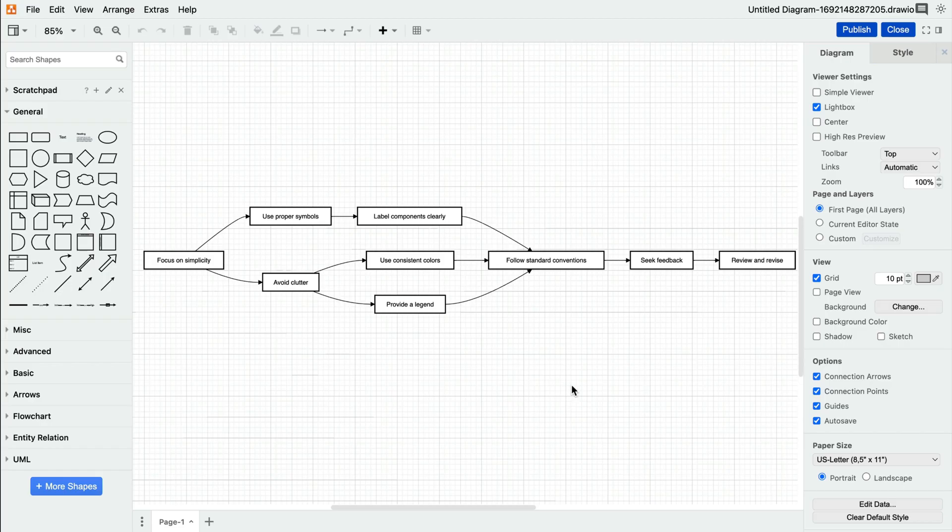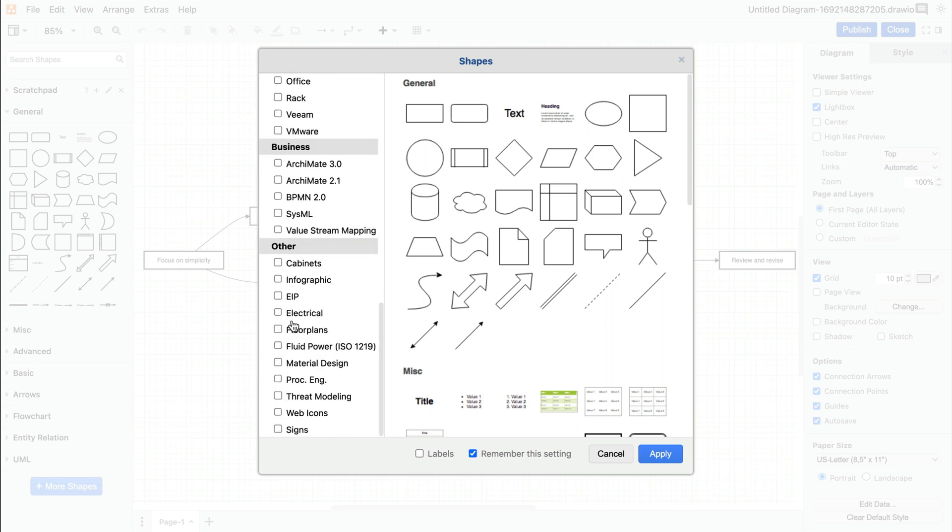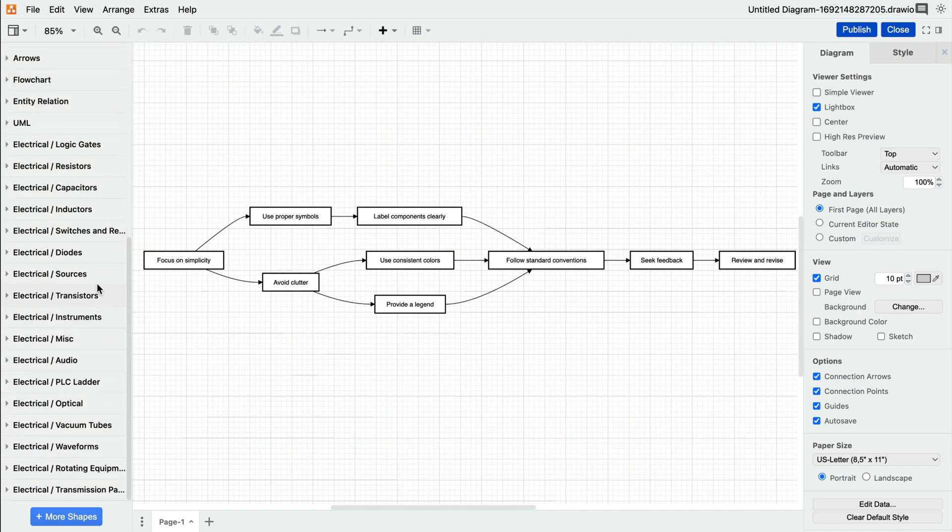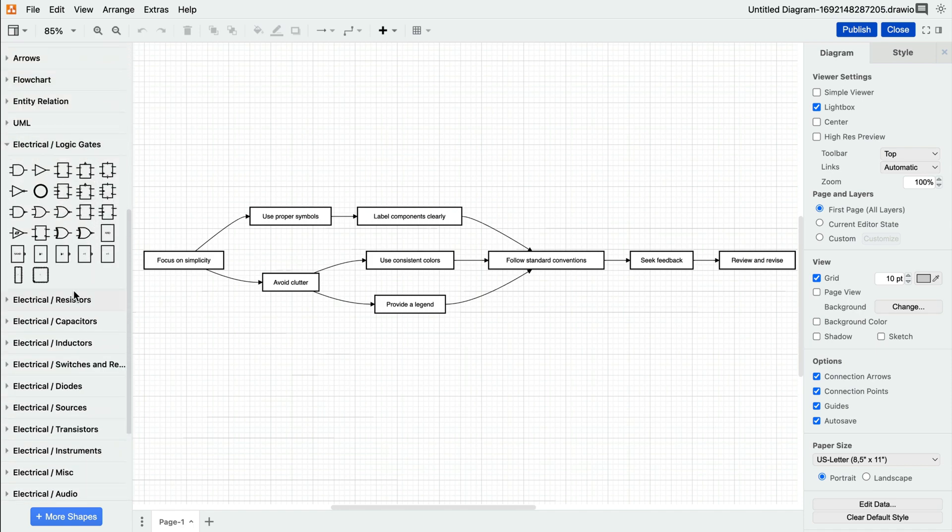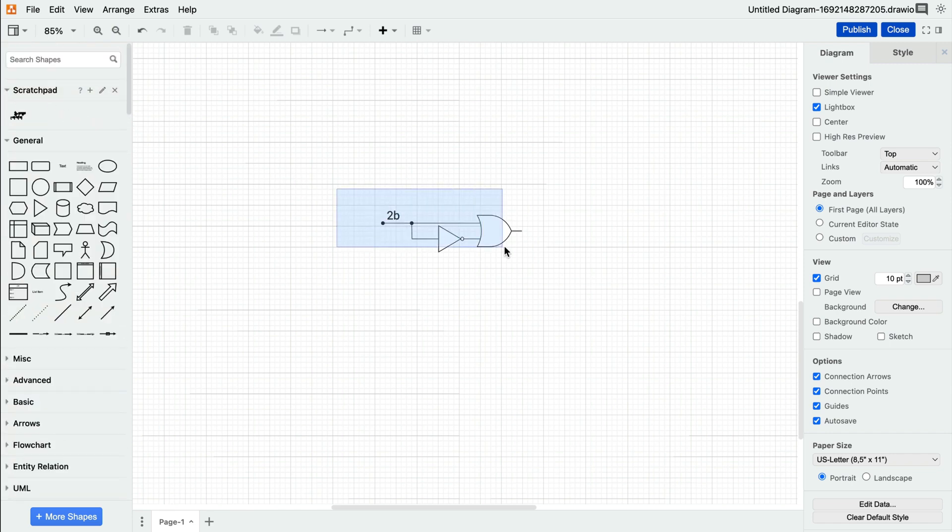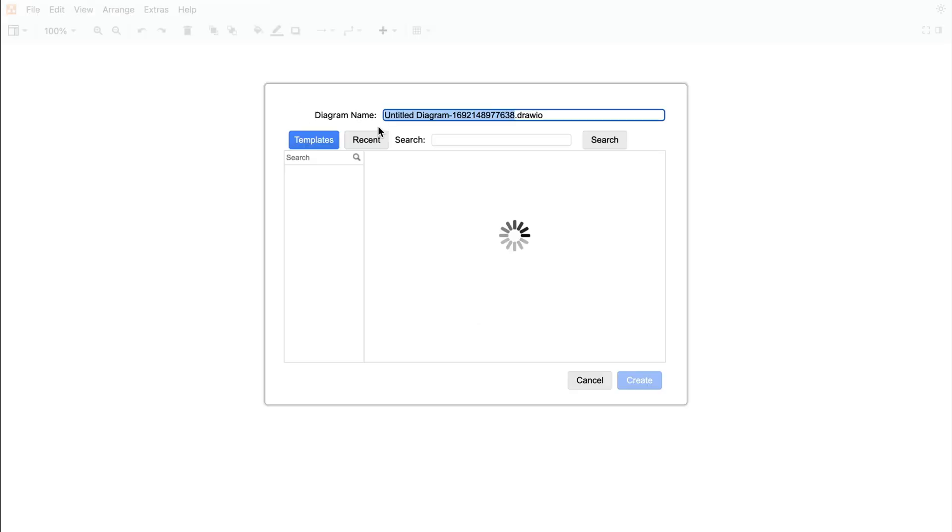Whichever route you take, these unique template options lay the foundation, and with our various advanced shape libraries, like this electrical one, you're well equipped to make diagram creation efficient and accurate. For more unique or intricate shapes that you end up creating on your own, be sure to add them to your scratchpad to use over and over again, even when you're in a brand new editor.